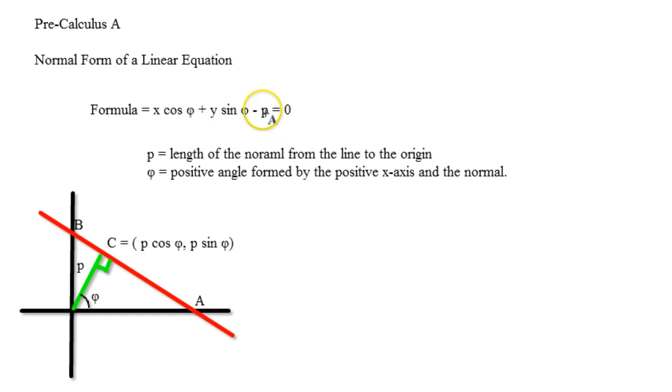Here's the formula. Now, this is actually going to be rho, but for some reason, the type is not coming up in Adobe, so I just left it as P, because P looks like rho. P is the length of the normal from the line to the origin, and this is phi.